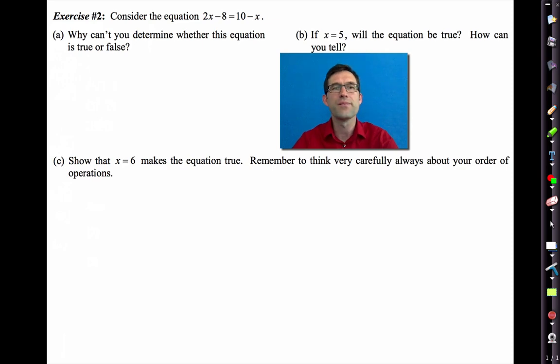Consider the equation 2x minus 8 equals 10 minus x. Why can't you determine whether this equation is true or false? Think about that for a moment. Well, we can't determine whether this equation is true or false because we don't have a value for x. We don't have a value for x. So it might be true. It might be false. Right now, we would call this an open equation. It's an open equation. Its truth or falsehood can't be determined.